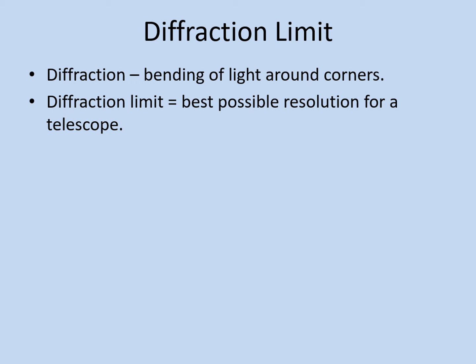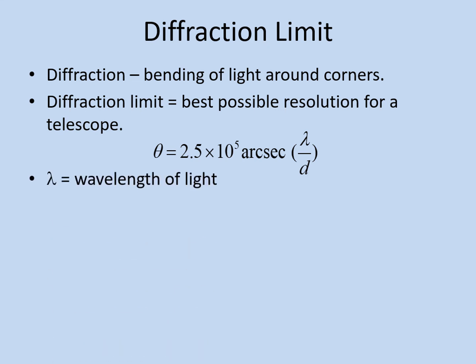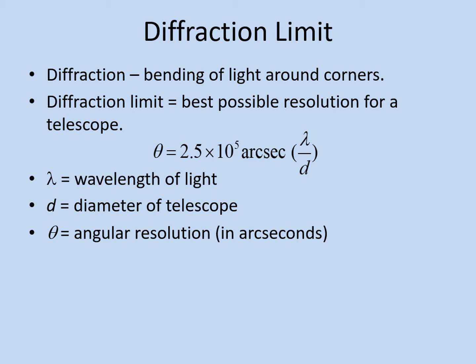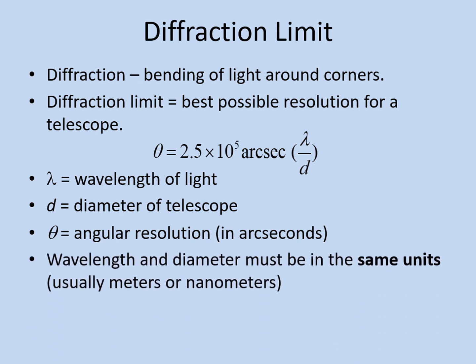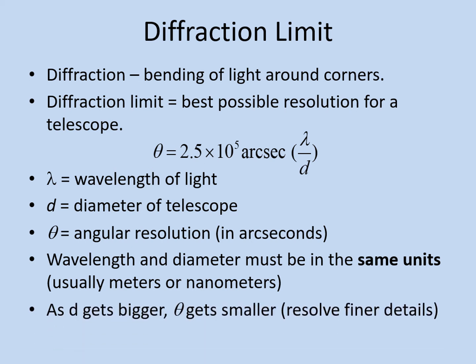The formula that gives the angular resolution is: theta equals 2.5 times 10 to the fifth arc seconds, times lambda over D. Lambda is the wavelength of the light, D is the diameter of the telescope, and theta is the angular resolution in arc seconds. In this formula, the wavelength of light and the diameter of the telescope must be in the same units so they cancel, leaving just arc seconds — usually nanometers or meters. Notice that as the diameter gets bigger, the angular resolution gets smaller, meaning you can resolve finer details in the objects you're studying.